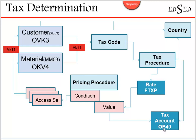The value calculated in the pricing procedure will ultimately be posted into the tax account maintained in OB40. This is the overall integration between the tax procedure, pricing procedure, tax code, tax rate, and the GL account — posted based on the customer being sold to and the material, which is the product being sold in SAP.